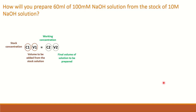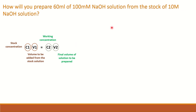Next, you have a question: how will you prepare 60 ml of 100 millimolar NaOH solution from a stock of 10 molar NaOH solution? Here is a simple formula for it — C1V1 = C2V2. We can use this formula to calculate any of these concentration-based questions. I am going to play a simple video which will explain how you are going to prepare a working solution of 100 millimolar from the stock solution of 10 molars.